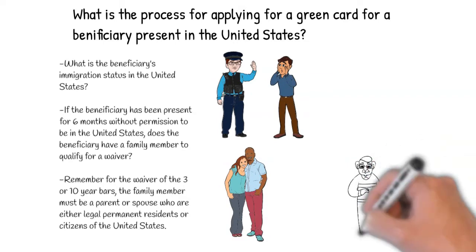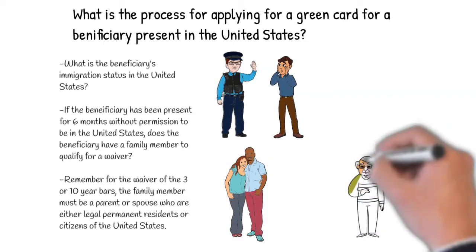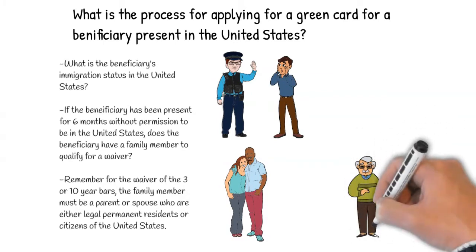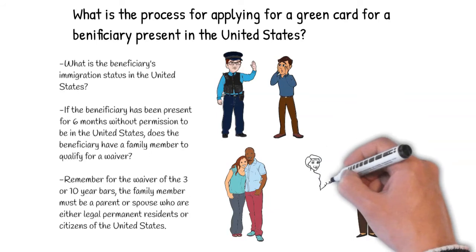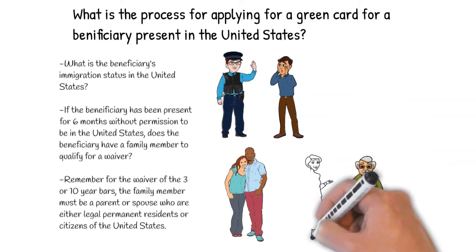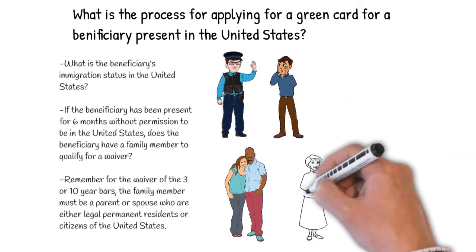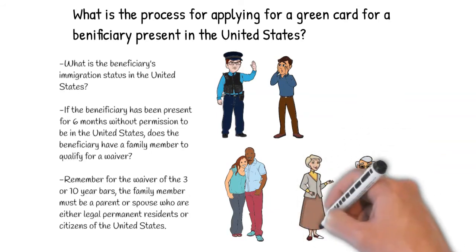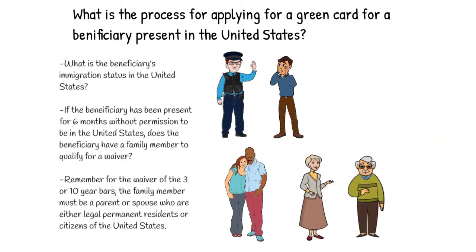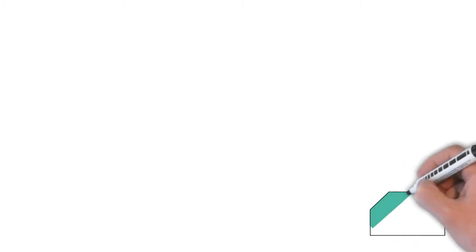Keep in mind that in most cases, if the beneficiary is in the United States with legal status and there is no impediment to filing for the green card immediately, the beneficiary may be eligible to apply for the green card within the United States through the adjustment of status process. You can view our video explaining the adjustment of status process by following the link below.